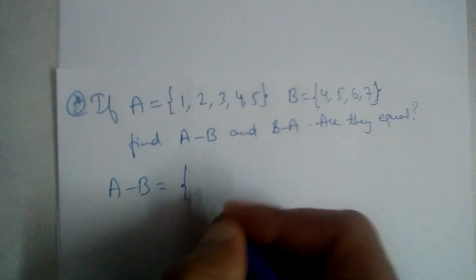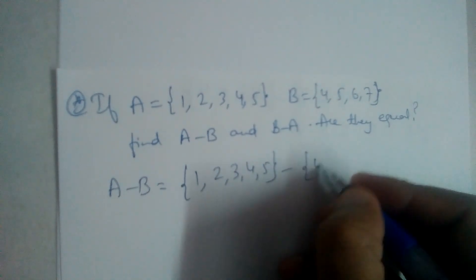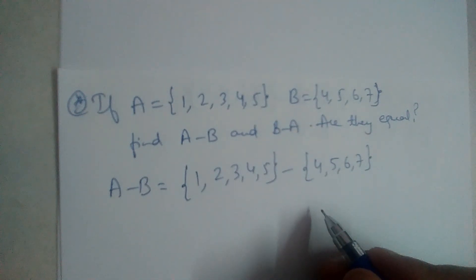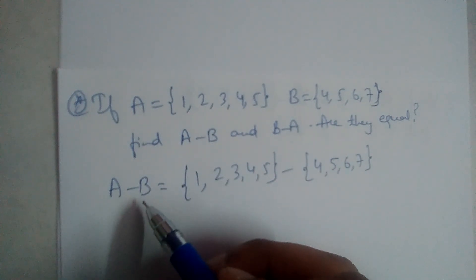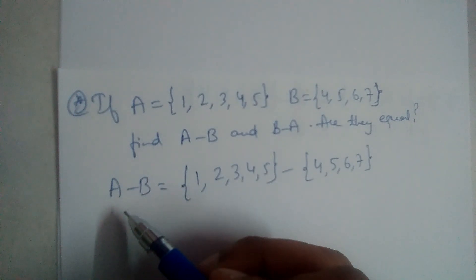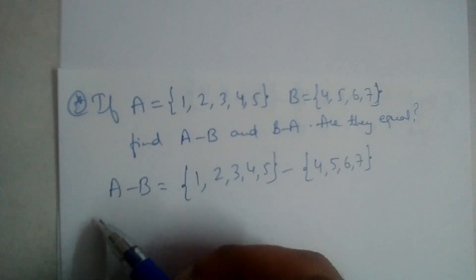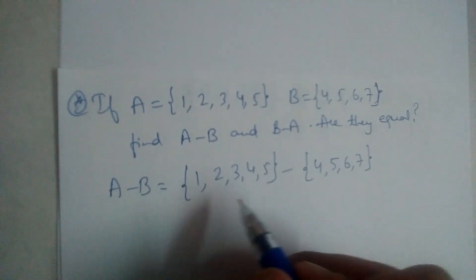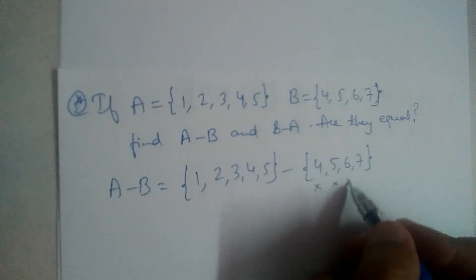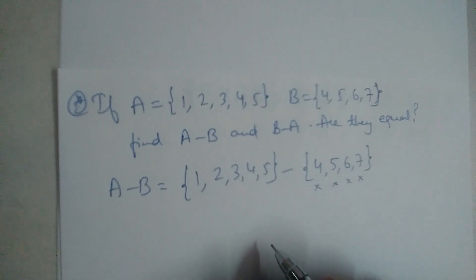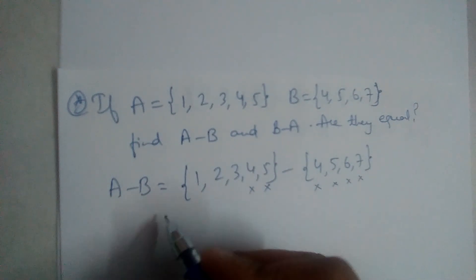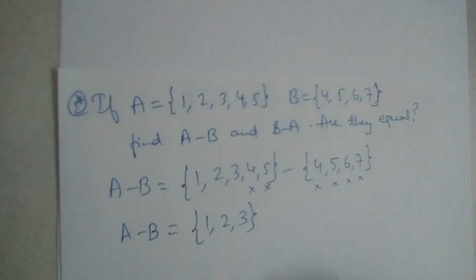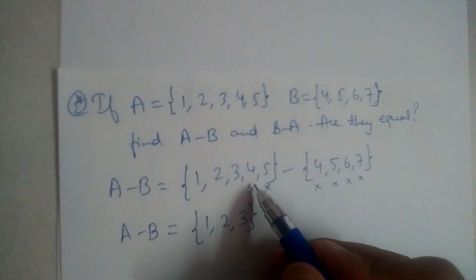A minus B: {1, 2, 3, 4, 5} minus {4, 5, 6, 7}. As we studied in the previous video, A minus B is a set in which only the elements present in A are written. The elements present in B should not be written — so 4 and 5 we do not write. Therefore, A minus B is equal to {1, 2, 3}. We are not writing 4 and 5 because they are also present in B.